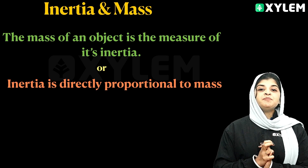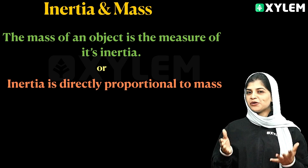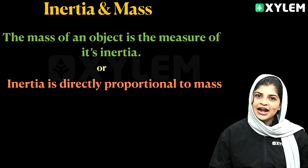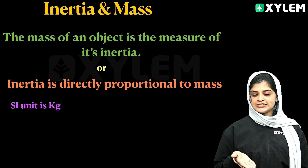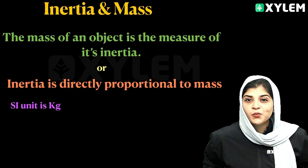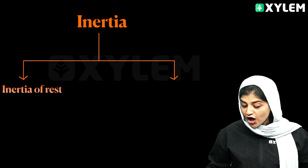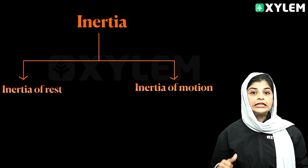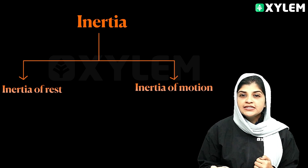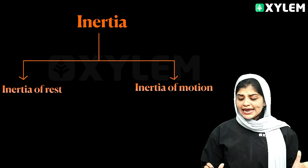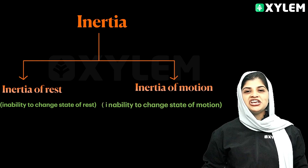The mass of an object is a measure of its inertia, and inertia is directly proportional to mass. The unit of inertia is the same as that of mass — kilogram. In this chapter we have two types of inertia: inertia of rest and inertia of motion.